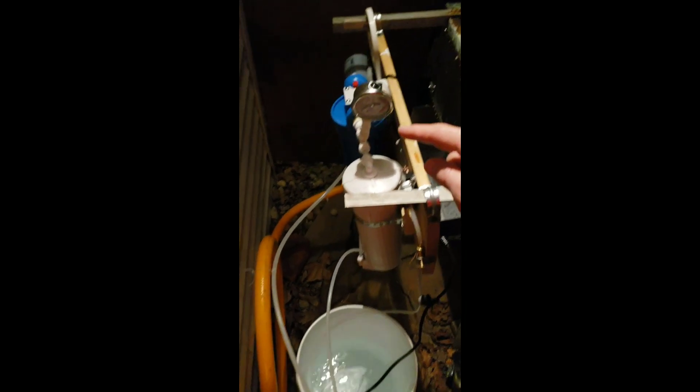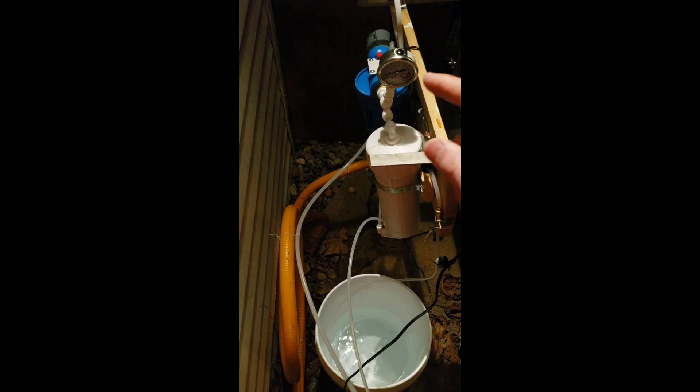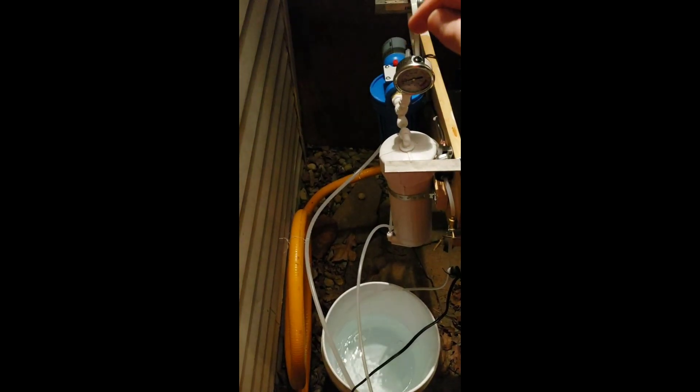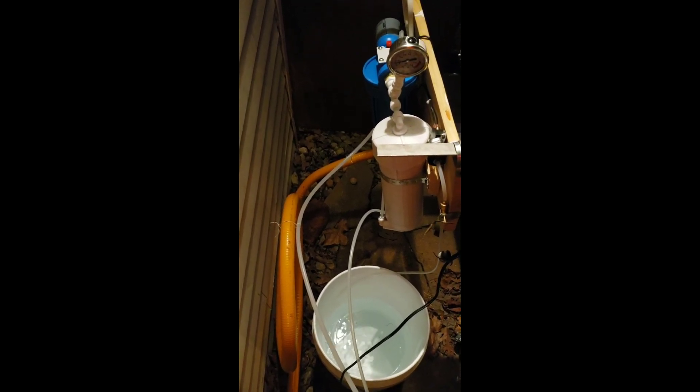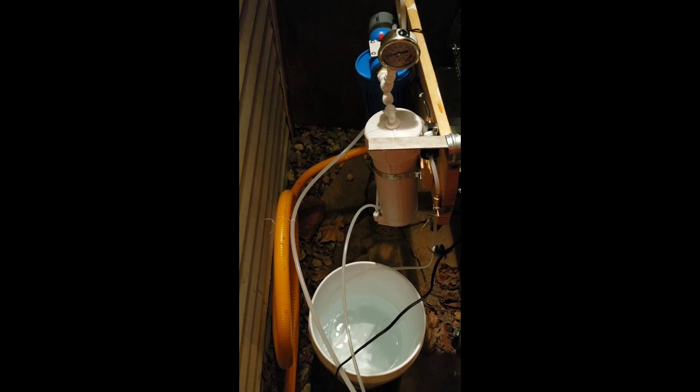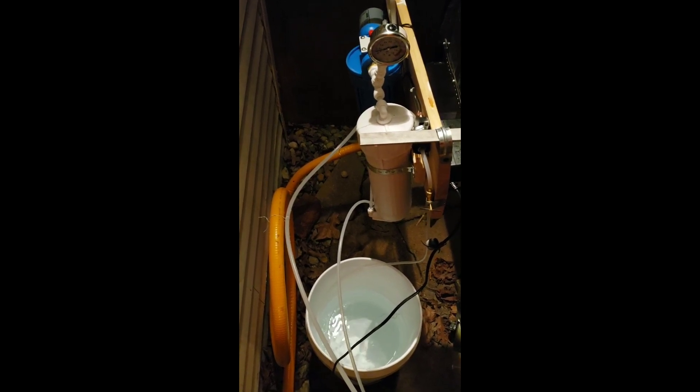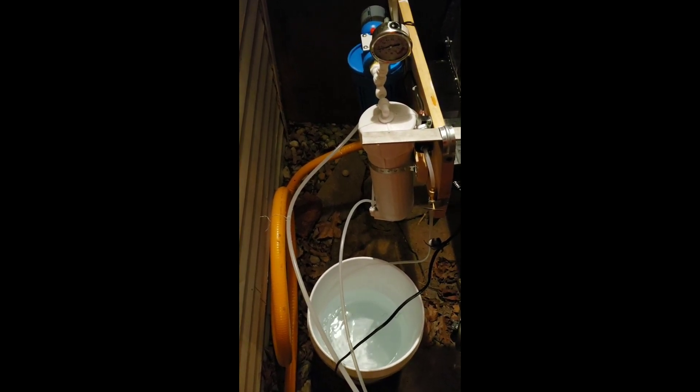Then you're going to take your intake that goes into your pump over on the other side of the RO. That's going to get dropped into your permeate container or your tank. That's going to be your inlet, and you're going to use that permeate to flush the RO membrane.